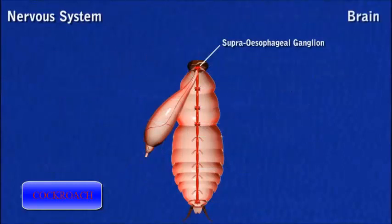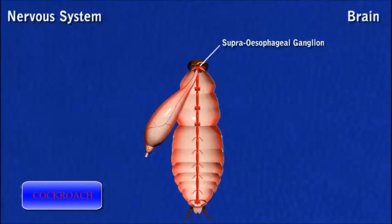The brain, or supraesophageal ganglion, is a large and bi-lobed mass located in the head above the oesophagus. It represents three pairs of ganglia of the head region fused together, and is divided into three parts: protocerebrum, deuterocerebrum, and tritocerebrum.